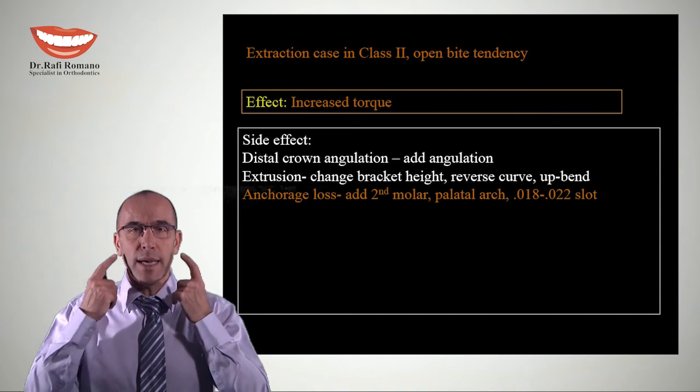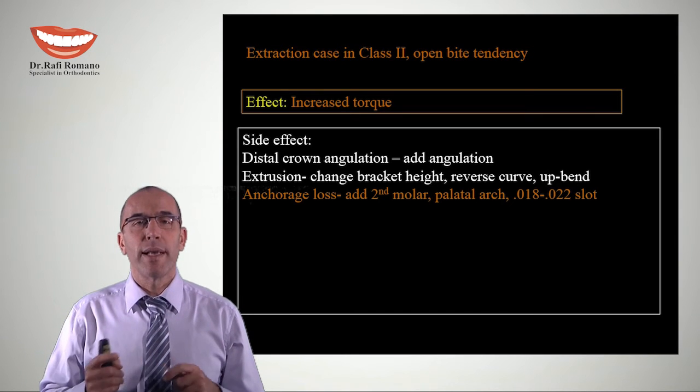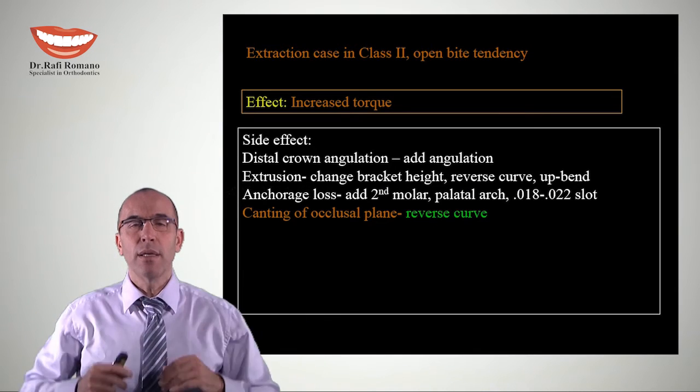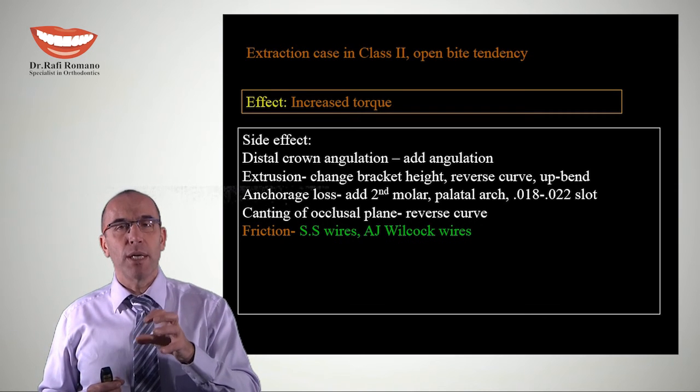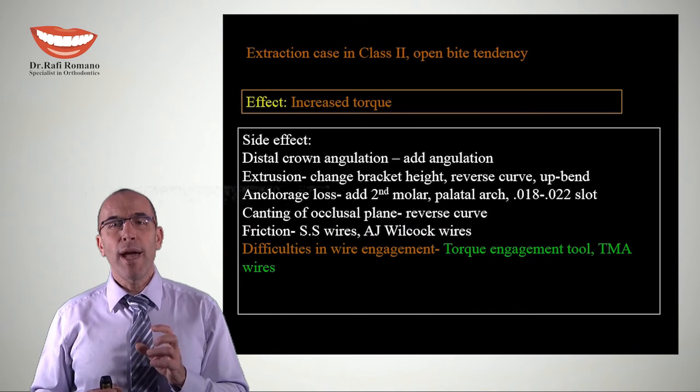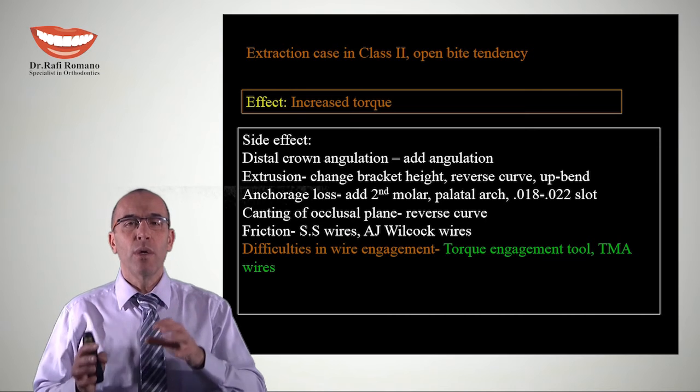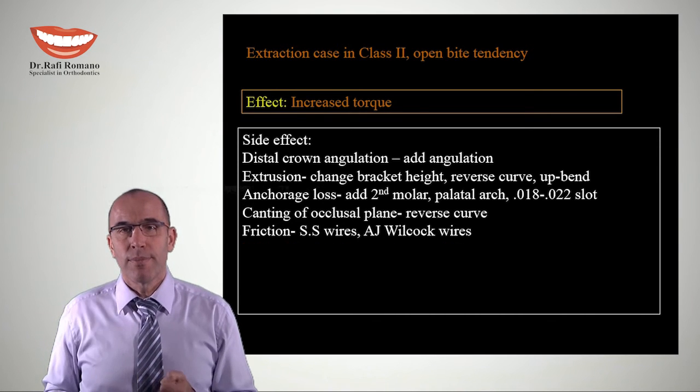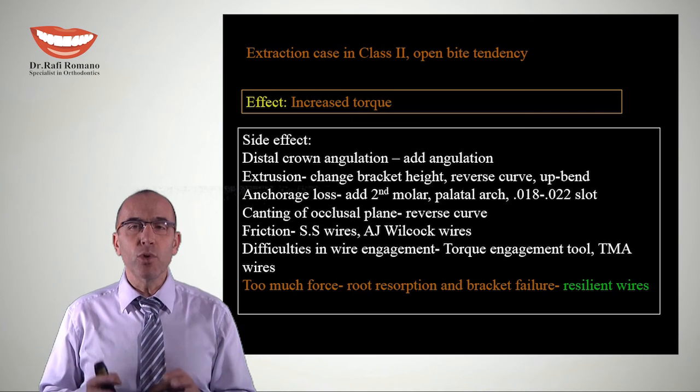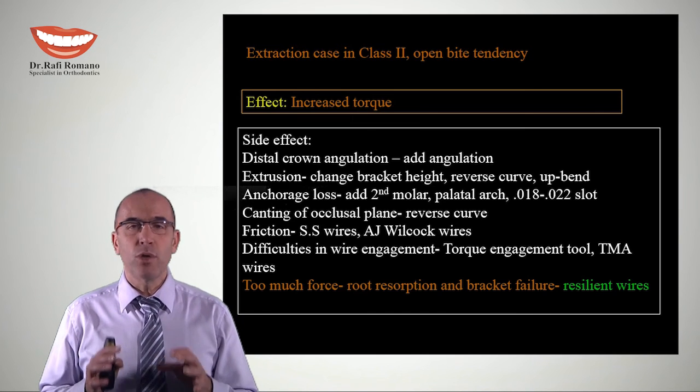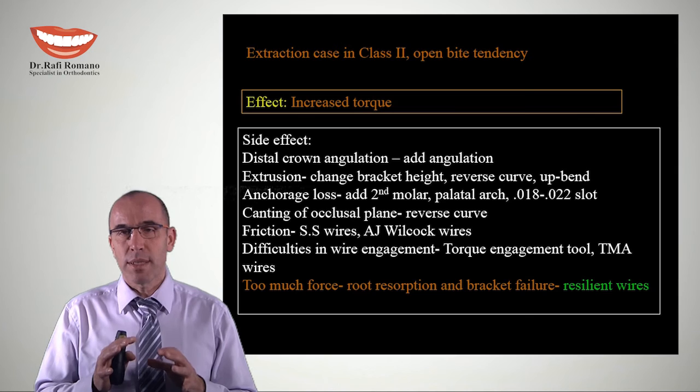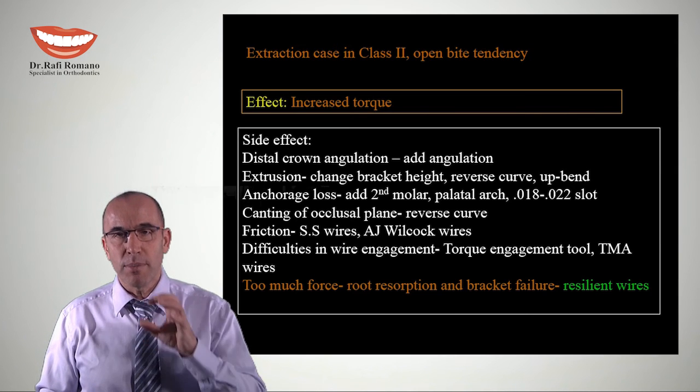If we have canting of the occlusal plane, we can use a reverse curve. If we have friction from this enlarged torque, we can use stainless steel wire versus beta titanium wire. If we have difficulties in wire engagement, we can use torque engagement tools. If we have too much force, we can get root resorption and bracket failures. This is why we use resilient wires. For torque, we don't use stainless steel - we use TMA wires, which produce less force with the same wire size.